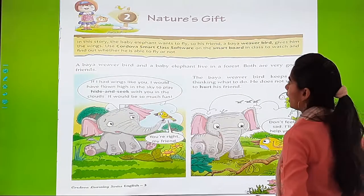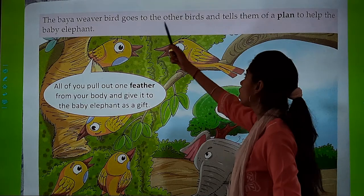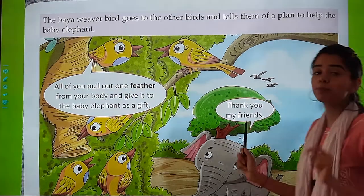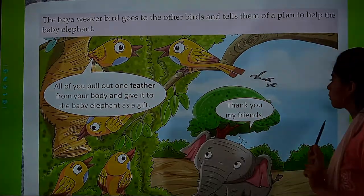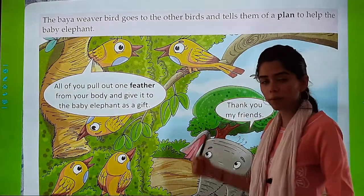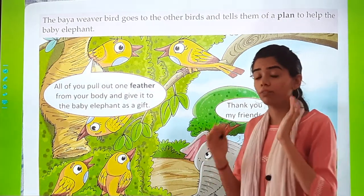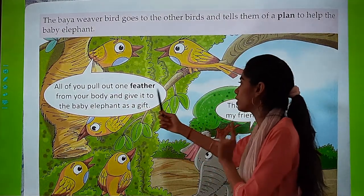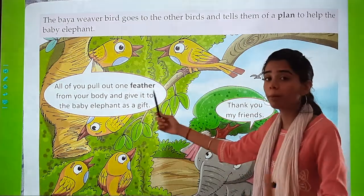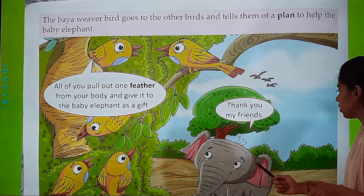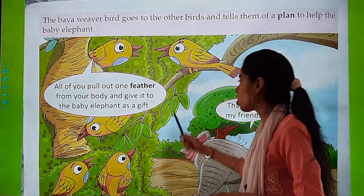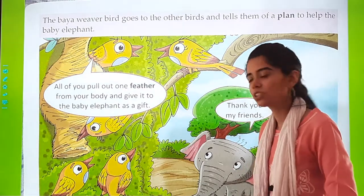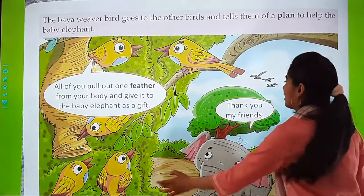Now let's move on to the next page. The bio-weaver bird goes to the other birds and tells them of a plan to help the baby elephant. She says: 'All of you put out one feather from your body and give it to the baby elephant as a gift.' The elephant heard all the conversation among the birds, and you can see the elephant is very happy. So he says, 'Thank you, my friends.'